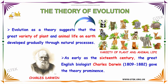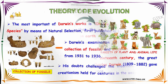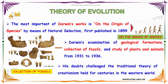You can see the variety of plant and animal life. As early as the 16th century, the great English biologist Charles Darwin — born 1809 to 1882 — gave the theory prominence. The most important of Darwin's works is 'On the Origin of Species,' published by means of natural selection, first published in the year 1859.